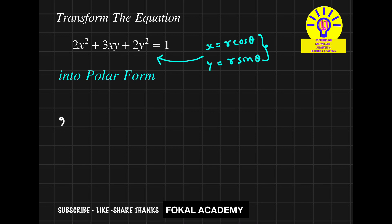Then we get 2 into x, means r cos θ, so r cos θ whole square, plus 3 into x means r cos θ, and y means r sin θ, plus 2y square is 2 into y means r sin θ, that is r sin θ whole square, that's equal to 1.